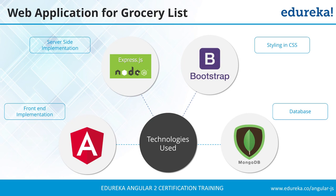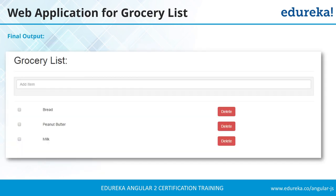When we finish our application it will have an input box and a list of items. Each item can be selected as finished or deleted, and a new item can be added with the input box. That's the end result of this particular project. Let's get going and start the application development for the grocery list.